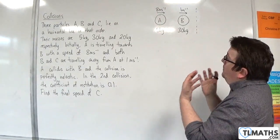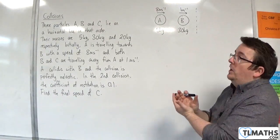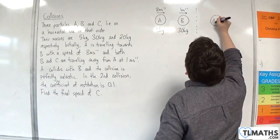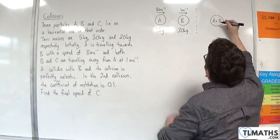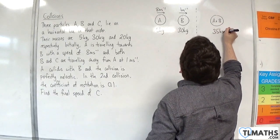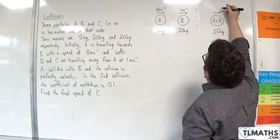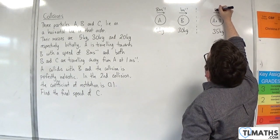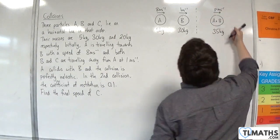And in that situation, A and B will coalesce. We'll actually have A and B coalesce into a single particle, so 35 kilos. And it'll be traveling, you would assume to the right, at P metres per second. We'll call it P.